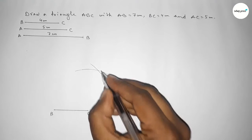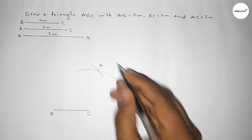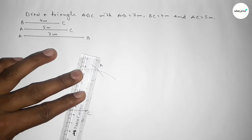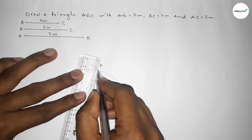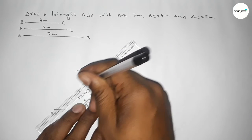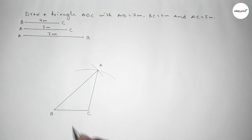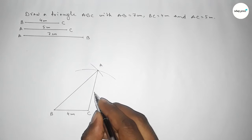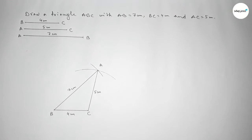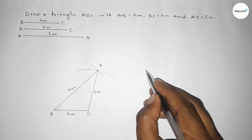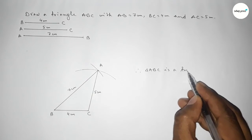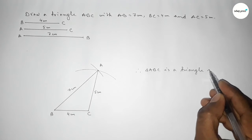Both arcs intersect at a point, which we label as point A. We then join A to C and A to B to complete triangle ABC. This side is 4 centimeters, this side is 5 centimeters, and this side is 7 centimeters.